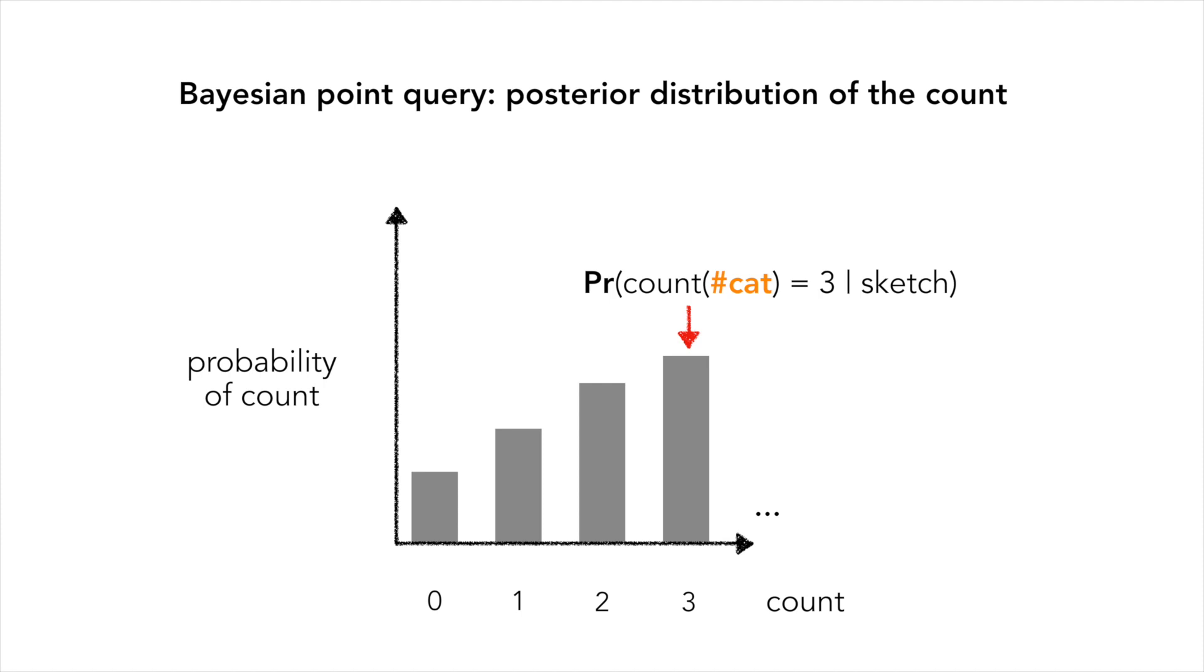We also show that the MAP estimator of the posterior recovers the Count-min sketch estimator, thereby inheriting nice properties of the classical method.